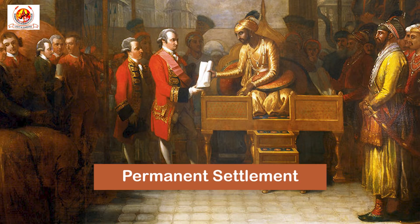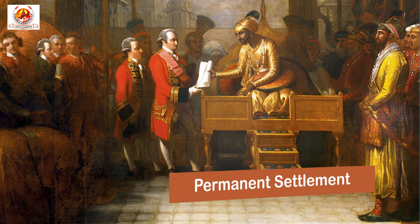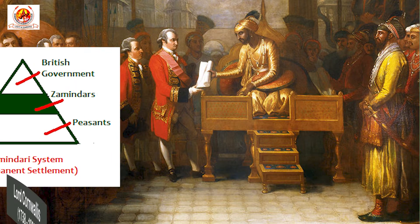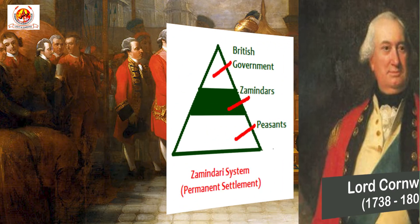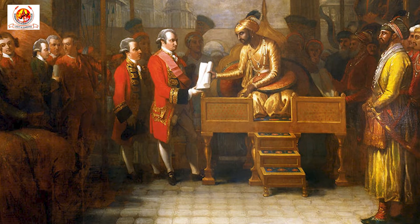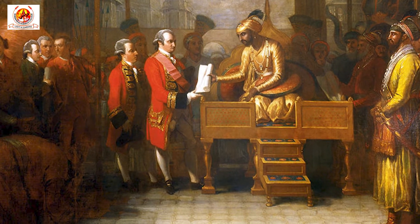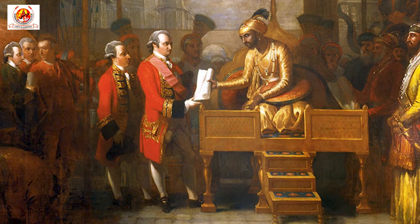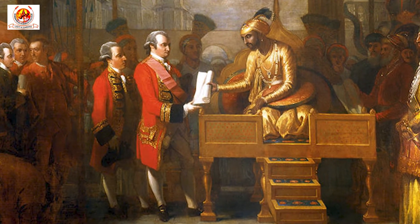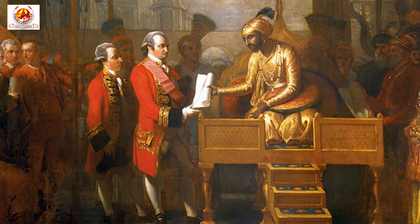First of all, let's discuss about the Permanent Settlement. Permanent Settlement was a new land revenue settlement introduced by Lord Cornwallis in 1793. The company wanted to fix the revenue permanently so as to get a regular and fixed flow of income for running their administration.